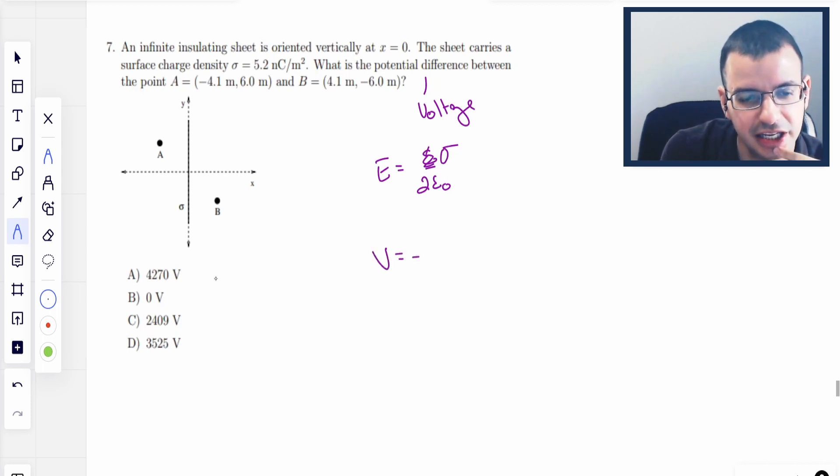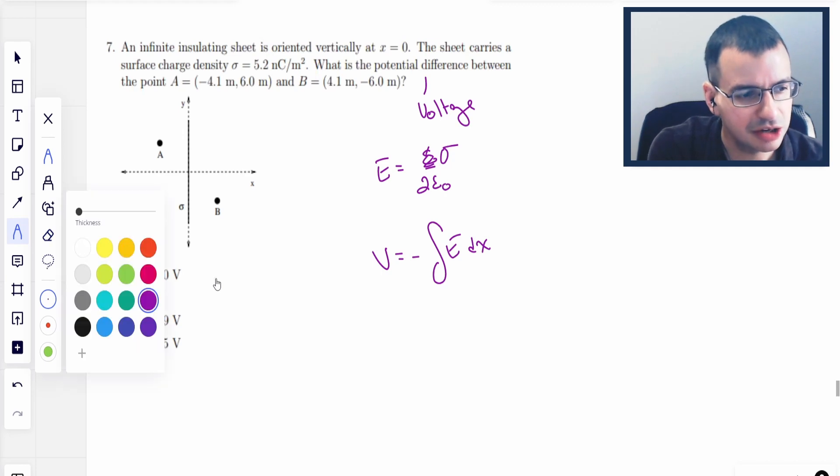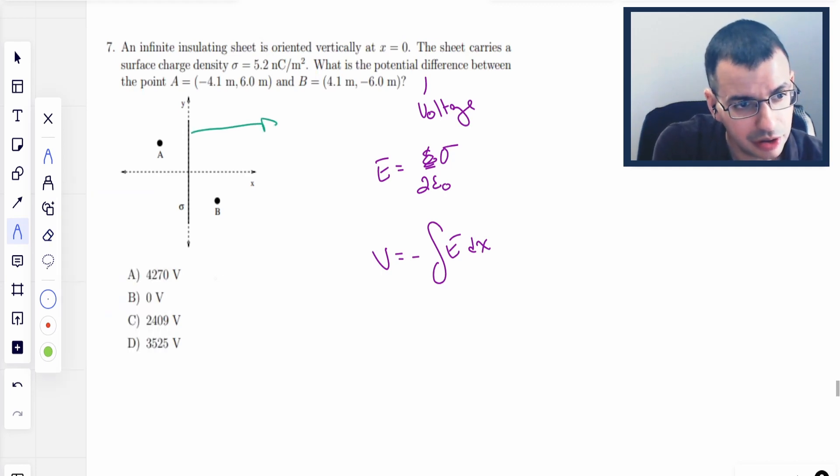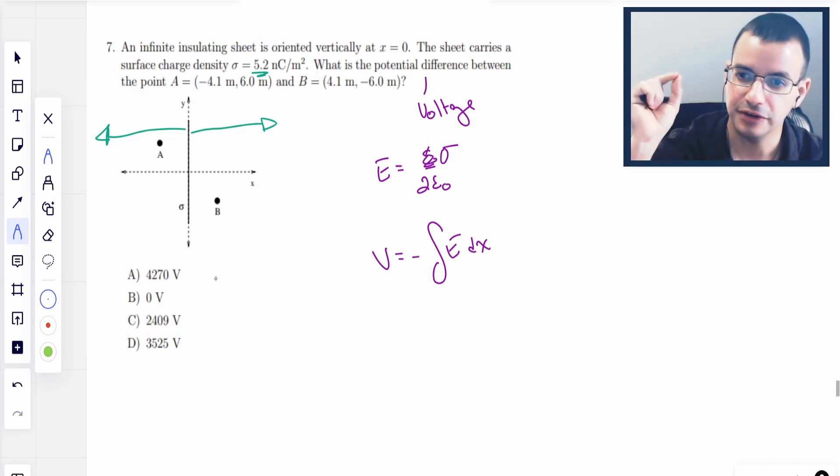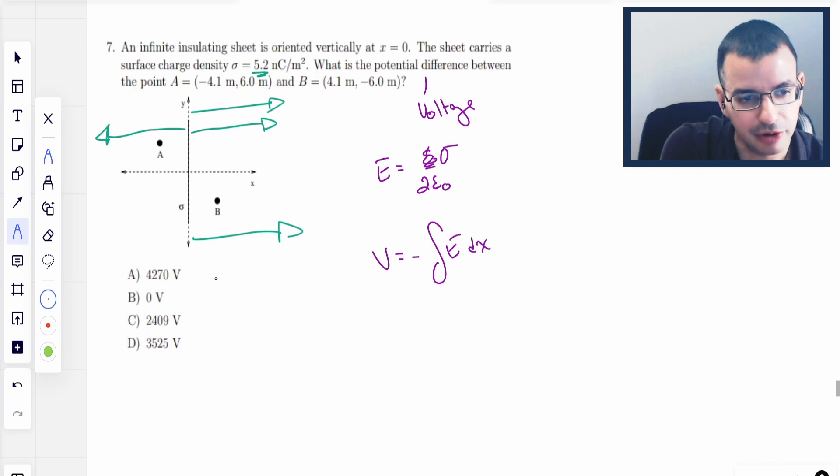Voltage is negative integral edx. In that case, x is going to be that direction. I'm going to draw the electric field on this. So it's a positive surface charge density. So the electric field lines are going to start at the charge and go outward radially. And it's going to be uniform everywhere. It's going to be independent of distance because it's sigma over 2 epsilon naught. No R involved.